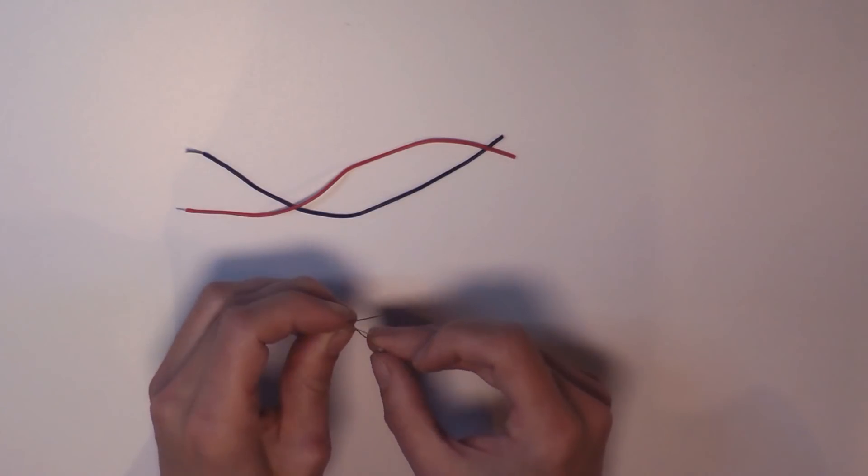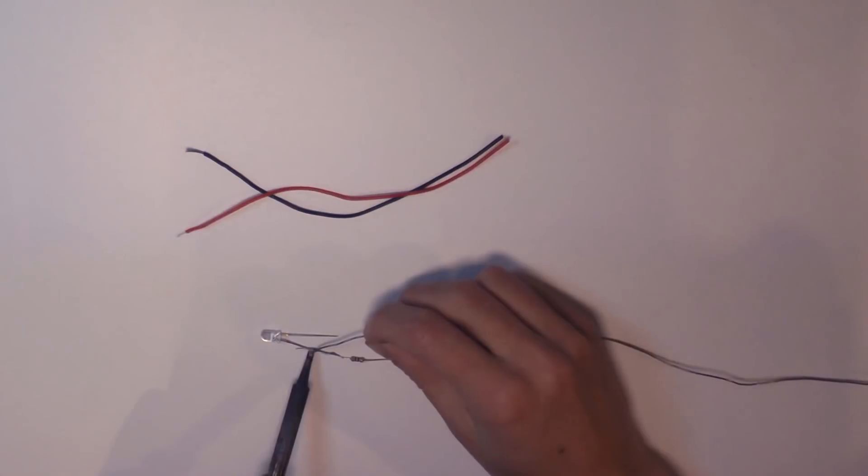Solder a 50 ohm resistor to the anode leg and then solder a red wire to the other end of the resistor.